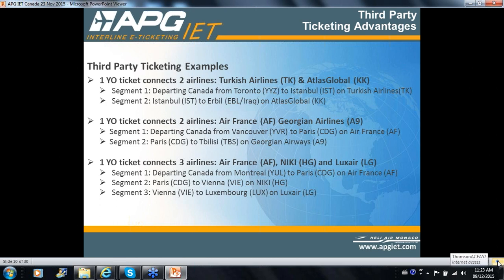Another scenario: Air France and Georgian Airways — not the one in Brampton, but out in Georgia, near Armenia, that region near the ex-Soviet area. You have Air France going from Vancouver to Paris, and then Paris to Tbilisi on Georgian Airways, coded Alpha 9. The YO ticket can even be used to combine three airlines. Even if Air France and Georgian Airlines don't have a META or VITA or interline ticketing agreement, you can combine them on a YO ticket, which allows that when plated on YO.